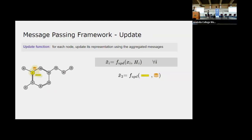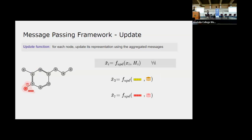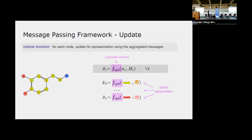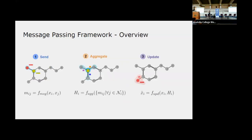The last step is the update operation: we combine the aggregated message — which captures neighborhood information — with the original representation stored in the node, integrating the neighbors' information into the node's representation. This is done for every node. The update function can be any learnable function; the simplest approach is to concatenate the aggregated message with the original node features and project them. Again, the update function shares parameters across all nodes so the framework can be applied to graphs with different numbers of nodes.